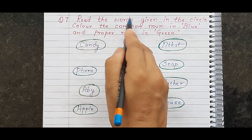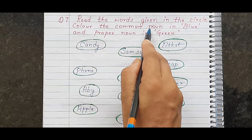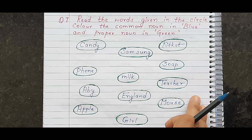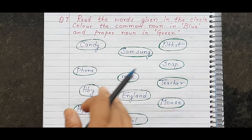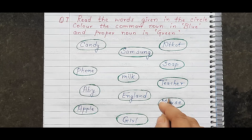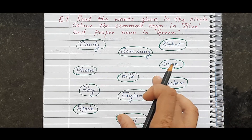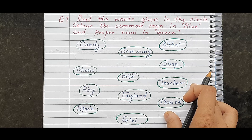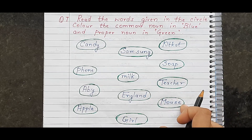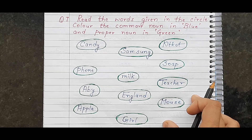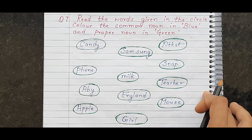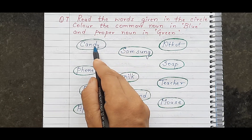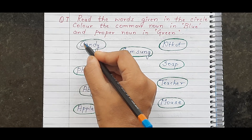Here is the next question: read the words given in the circle. Color the common nouns in blue and the proper nouns in green. Kids in Class 1 study common nouns and proper nouns. They must identify whether each word is a common noun or proper noun. For example, 'candy' — candy is a common noun, so we color it blue. 'Samsung' — Samsung is a particular, specific name, so it is a proper noun — we color it green.